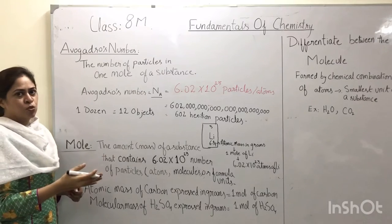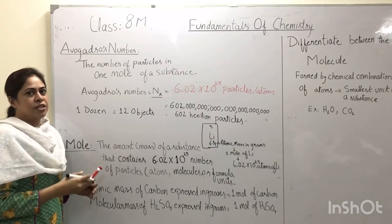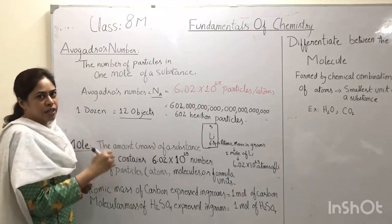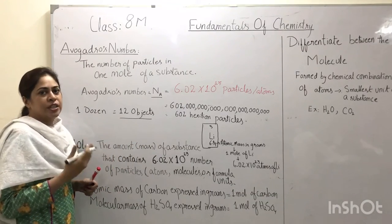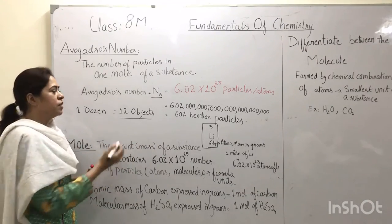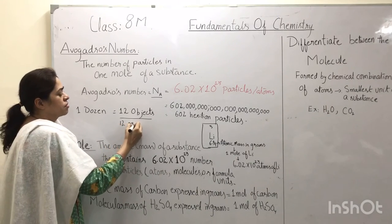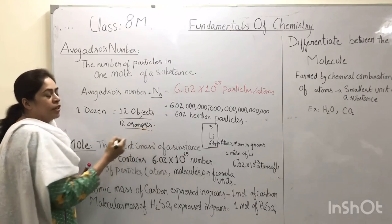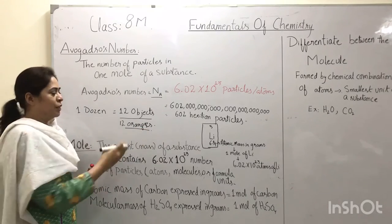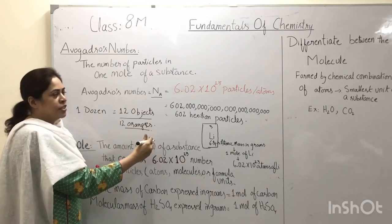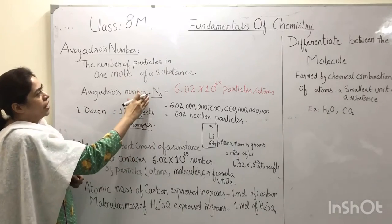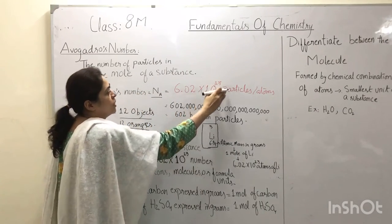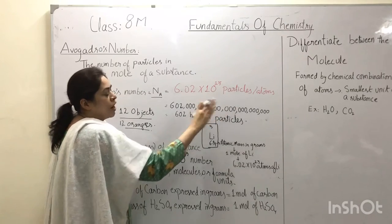It is similar to a dozen. A dozen is a term which means there are 12 objects in a dozen. If we say we have got a dozen oranges, that would be 12 oranges, and everybody knows it means 12 oranges. Similarly, Avogadro's number means 6.02 × 10²³ number of particles or atoms.